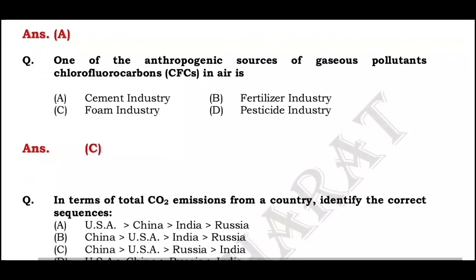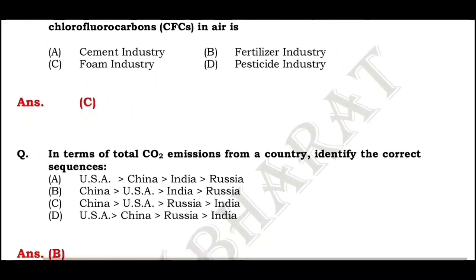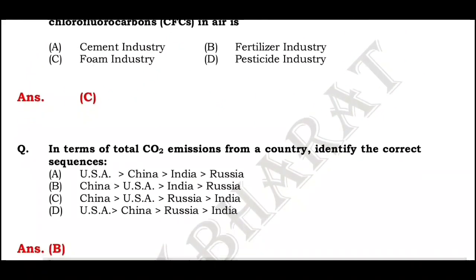In terms of total CO2 emissions from a country, identify the correct sequence. The right answer is option B: China, USA, India, and Russia.